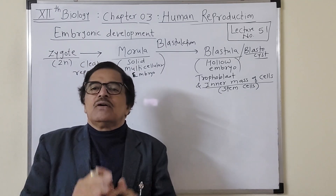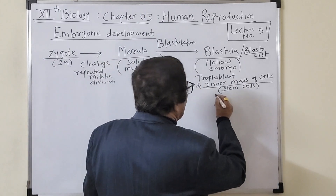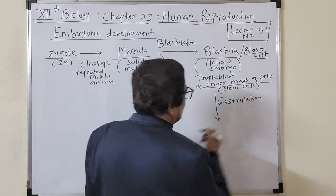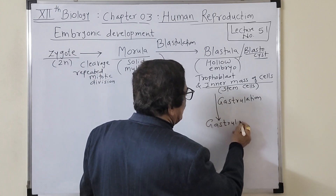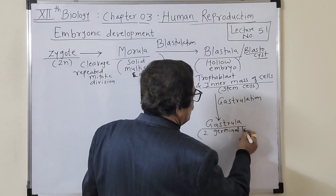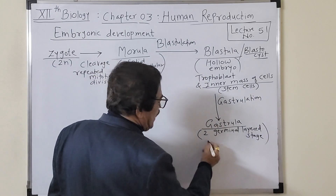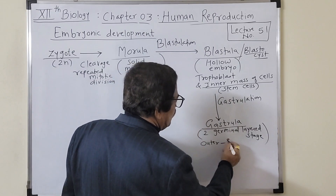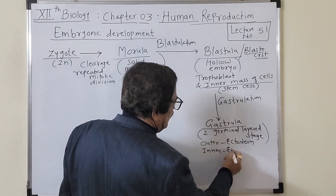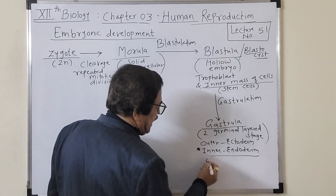Much development has occurred up to this point. The next process is known as gastrulation, by which an embryo called the gastrula is formed. Gastrulation produces a two-germinal-layered stage — the outer germinal layer is known as the ectoderm and the inner is known as the endoderm. The endoderm is developed first, and there is a cavity inside.